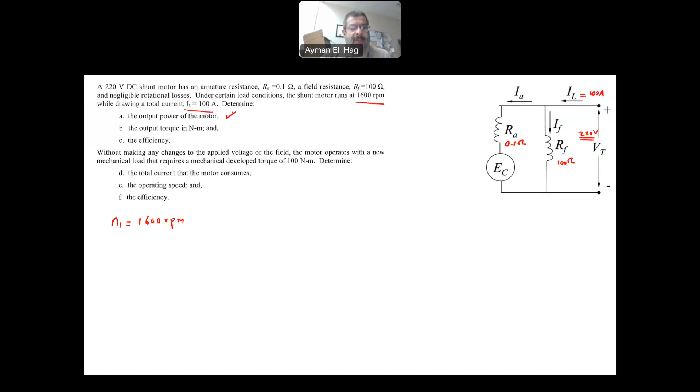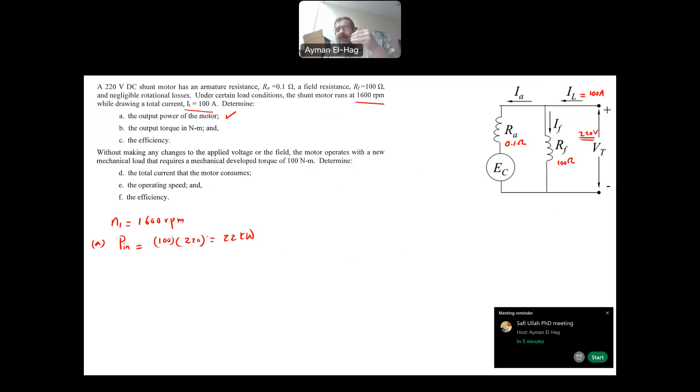Determine the output power of your motor. What is basically your output power? Okay, this is part A. Now, first we need to find PN. So your PN is basically equal to the current, the input current, the 100, times the input voltage, which is 220, and this will give me 22 kilowatt. Then we need to subtract from PN the losses to find your Pout.